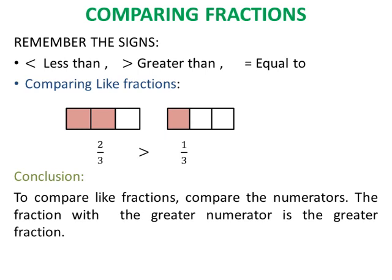Let us see more examples. Compare 9 by 11 and 7 by 11. The denominators are the same, so they are like fractions. According to the rule, we compare the numerators. The fraction 9 by 11 has the greater numerator, so 9 by 11 is the greater fraction. We put the greater than sign between them. Thus, 9 by 11 is greater than 7 by 11.